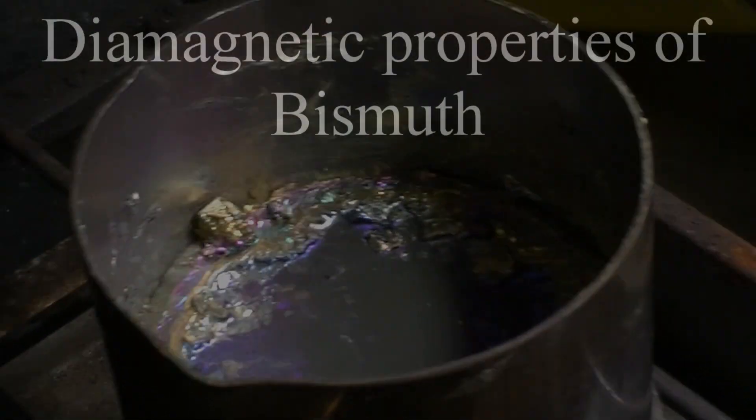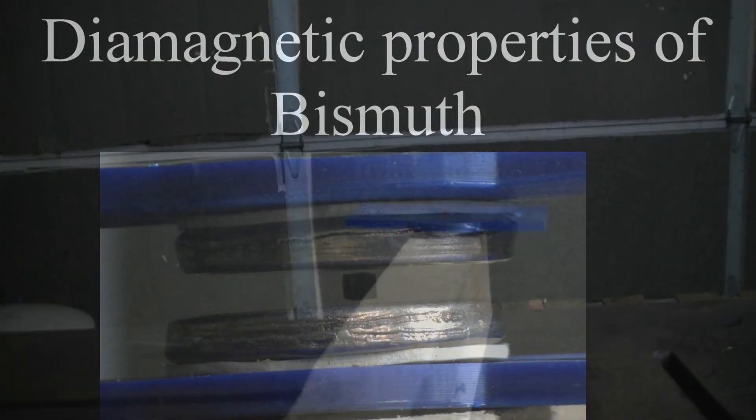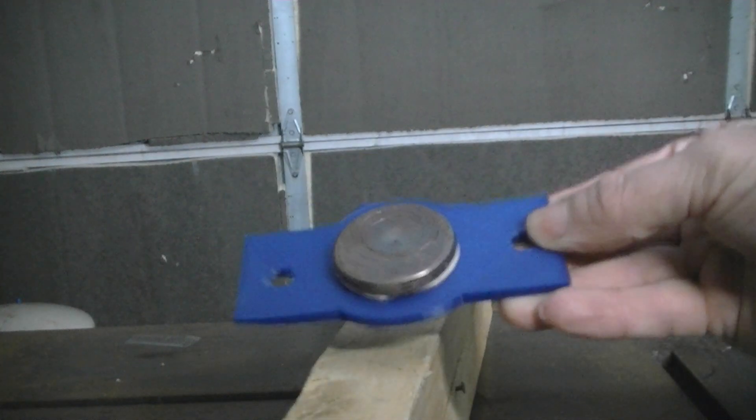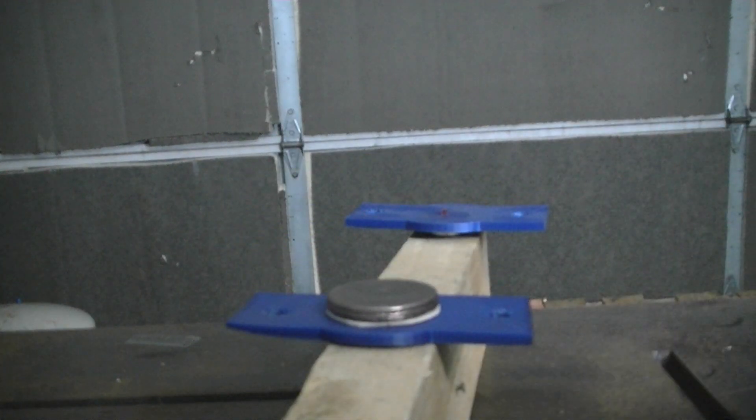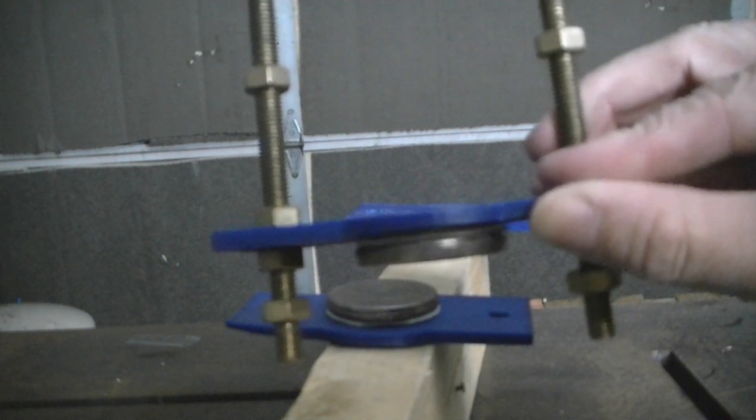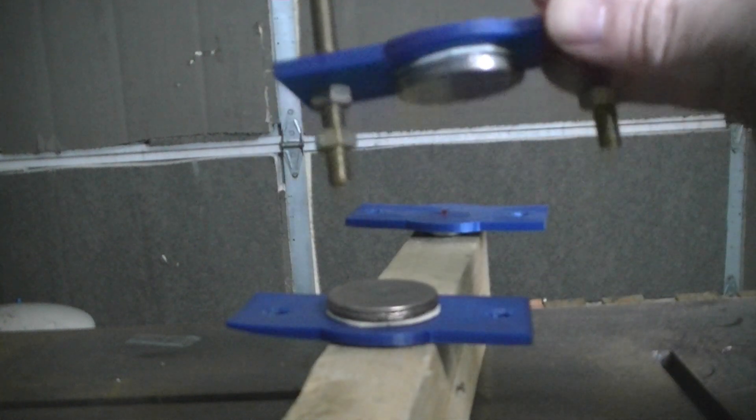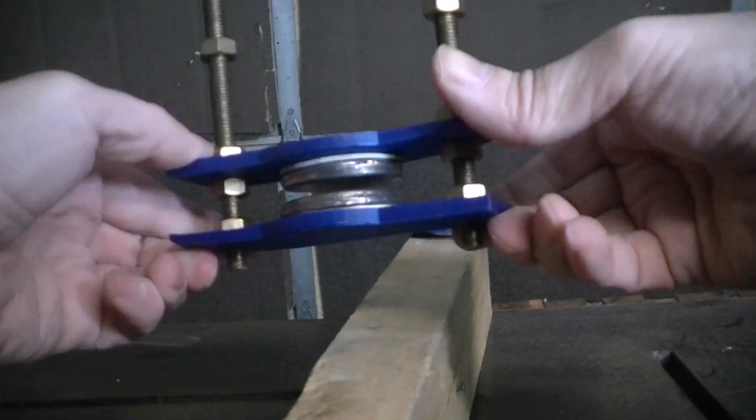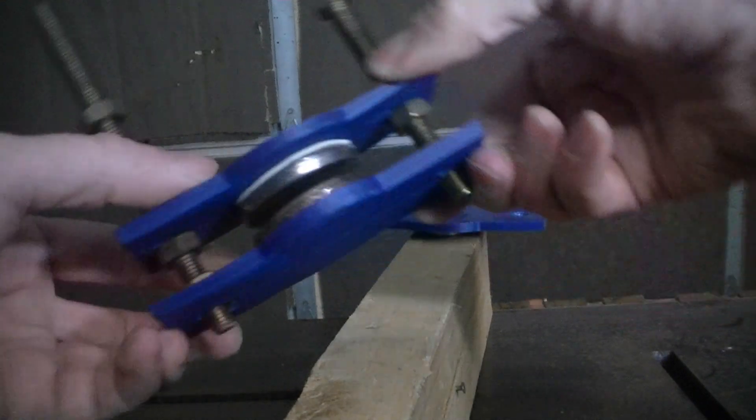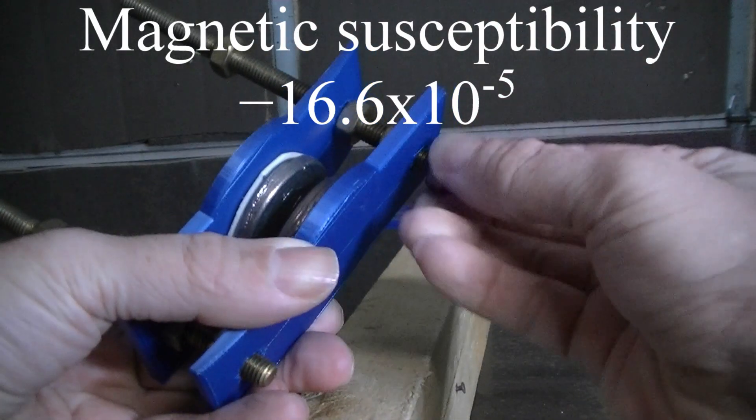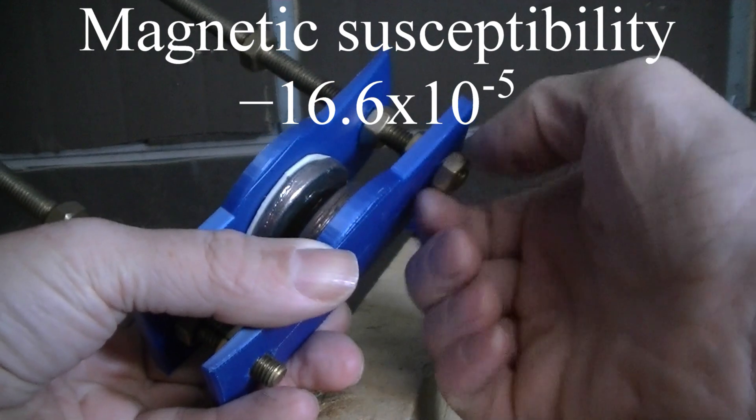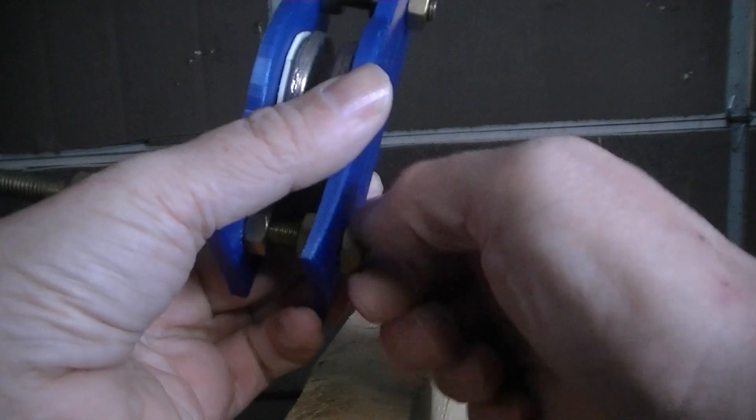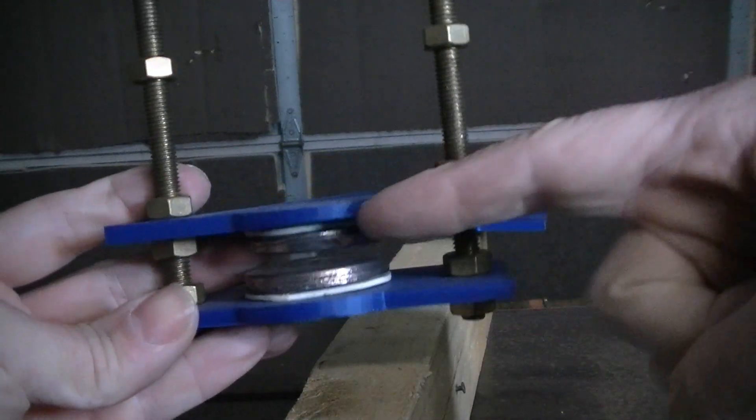In our final demonstration, we are going to look at some of the diamagnetic properties of bismuth. We have some bismuth, these are the pucks that we cast earlier. Diamagnetism is a type of magnetic interaction that occurs when a material generates an internal field that opposes an external magnetic field. Bismuth has the greatest diamagnetic susceptibility of any element, or it is the most diamagnetic element at room temperature in the periodic table. An ideal diamagnetic susceptibility constant would be minus one, which is only possible with superconductors.